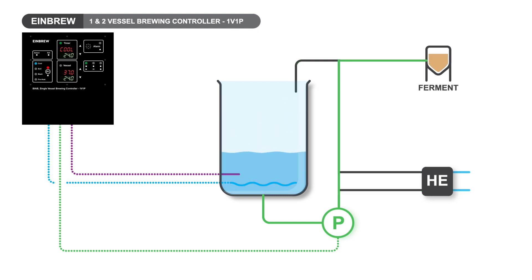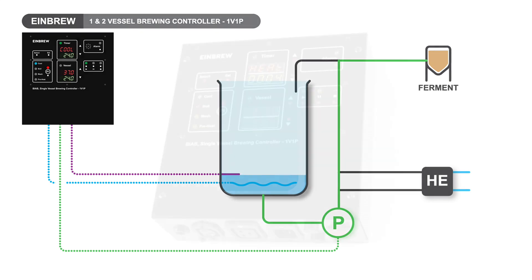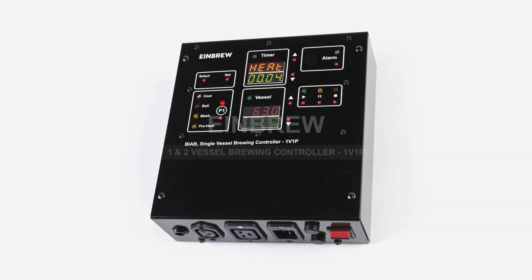The 1v1P is the best one and two vessel all-grain brewing controller. With international standard IEC plugs and sockets and the choice of NTC or PT100 temperature sensors, it can be used safely by home brewers around the world. Visit einbrew.com for more information.